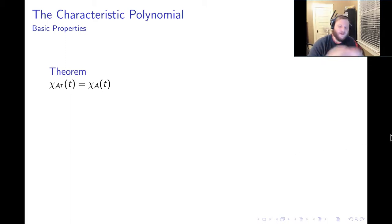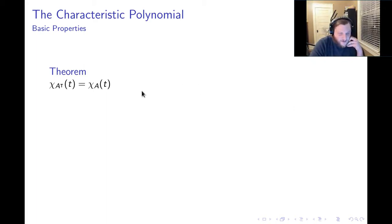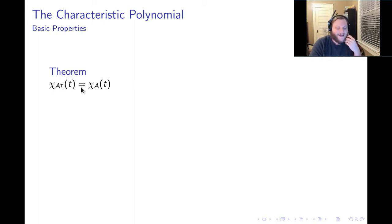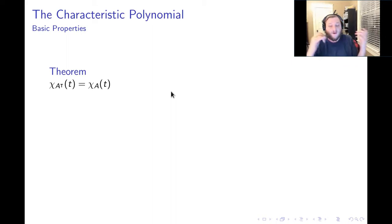There's plenty to say about the characteristic polynomial, but let's start with a warm-up theorem. The characteristic polynomial of the transpose of A is the same as the characteristic polynomial of A. So transposing a matrix doesn't change its characteristic polynomial. The question is: why?